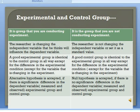The alternative hypothesis is accepted if there is a significant difference in the dependent variable as measured and observed between the experimental group and control group. The null hypothesis is accepted if there is no significant difference in the dependent variable that is measured and observed between the experimental group and control group.